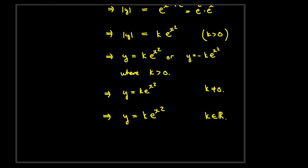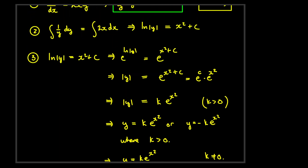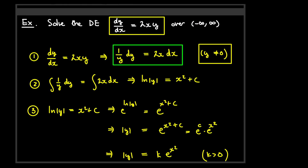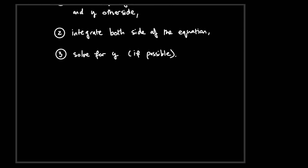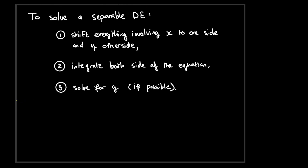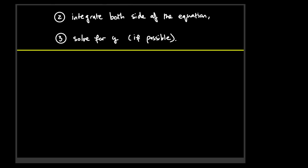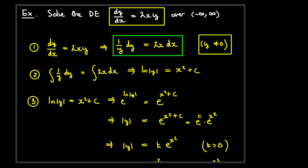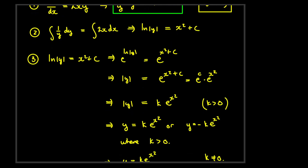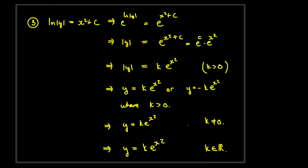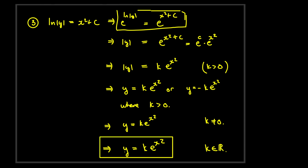So we have now solved this differential equation using the technique called separation of variables for separable differential equations. What is general about this technique is that we always end up with some expression involving y equal to some expression involving x, integrate both sides, and solve for y where possible. Often the result can appear complex, but after enough calculation we find that y is simply k · e^(x²), which is very clean.